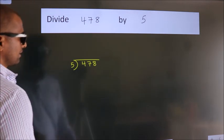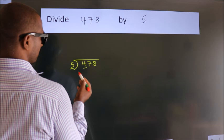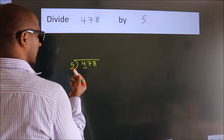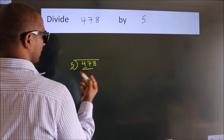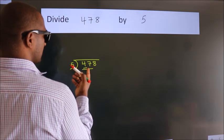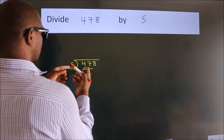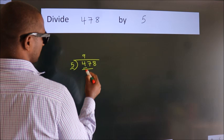Next, here we have 4, here 5. 4 smaller than 5. So we should take two numbers, 47. A number close to 47 in 5 table is 5 nines 45.